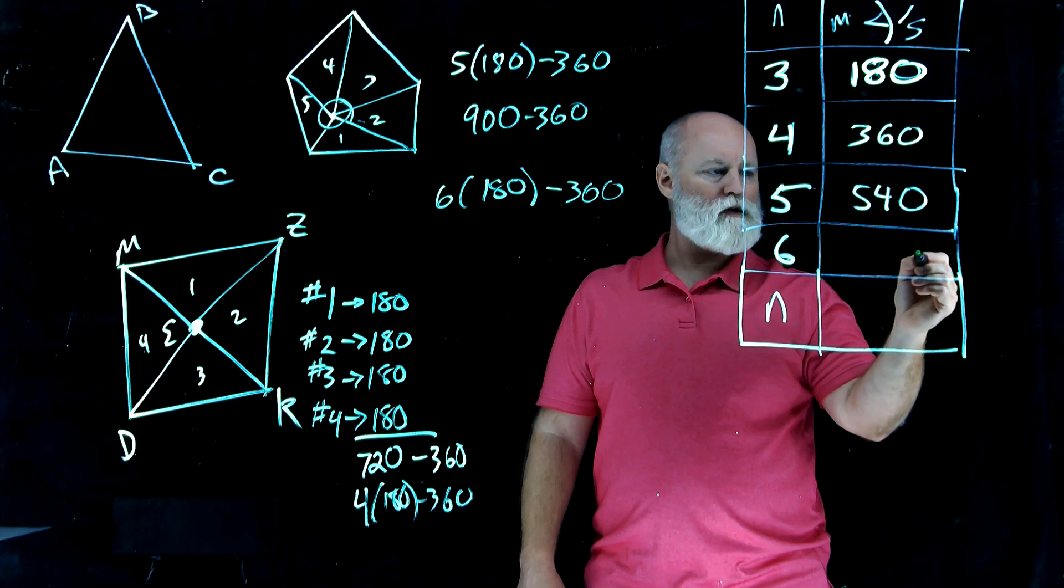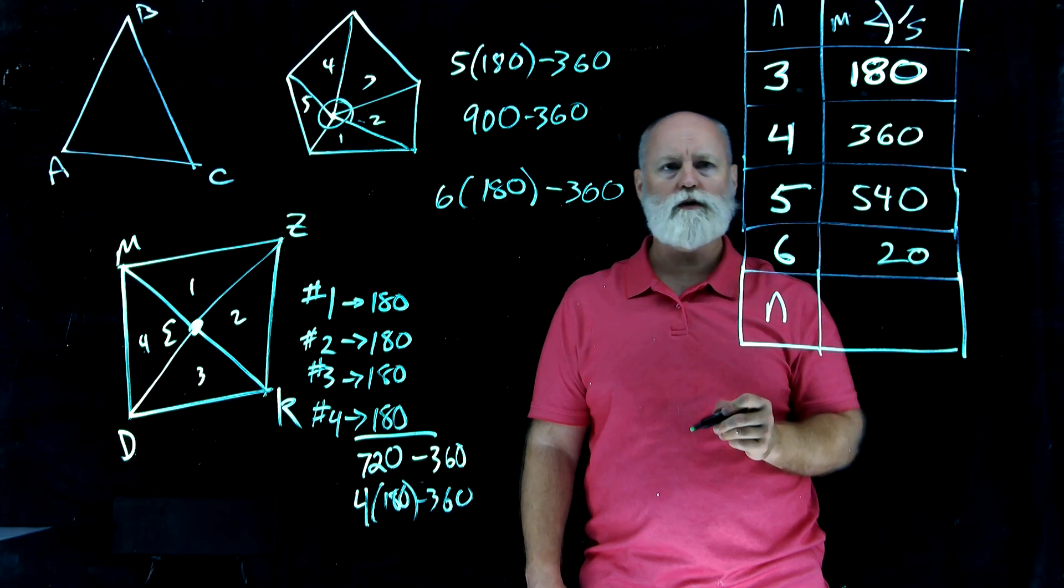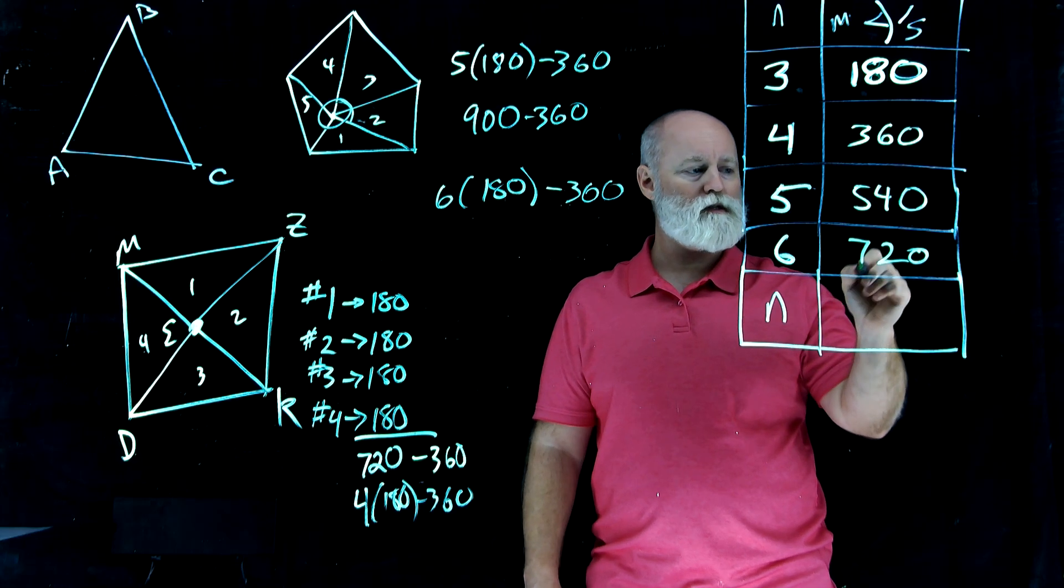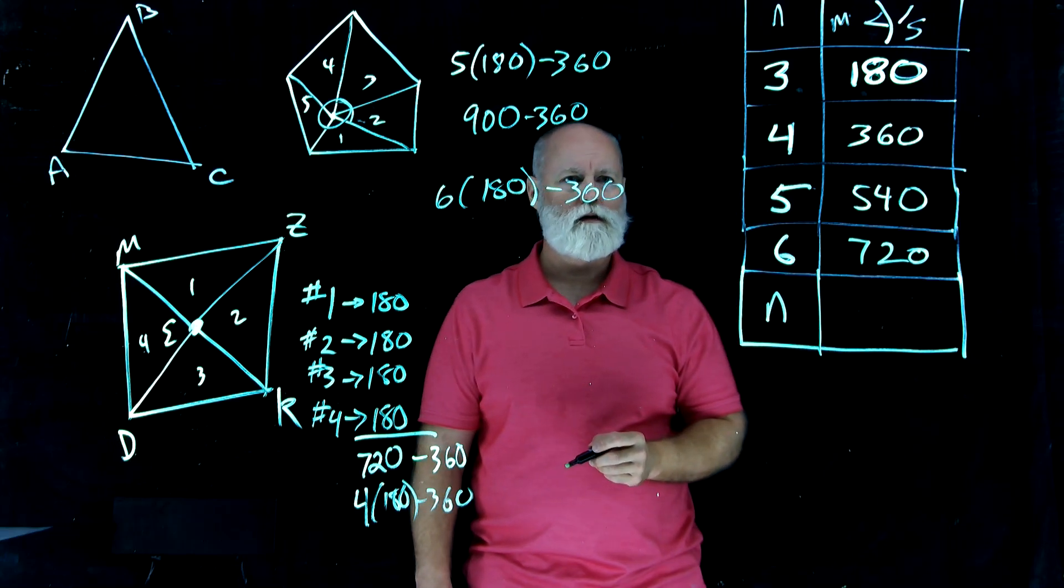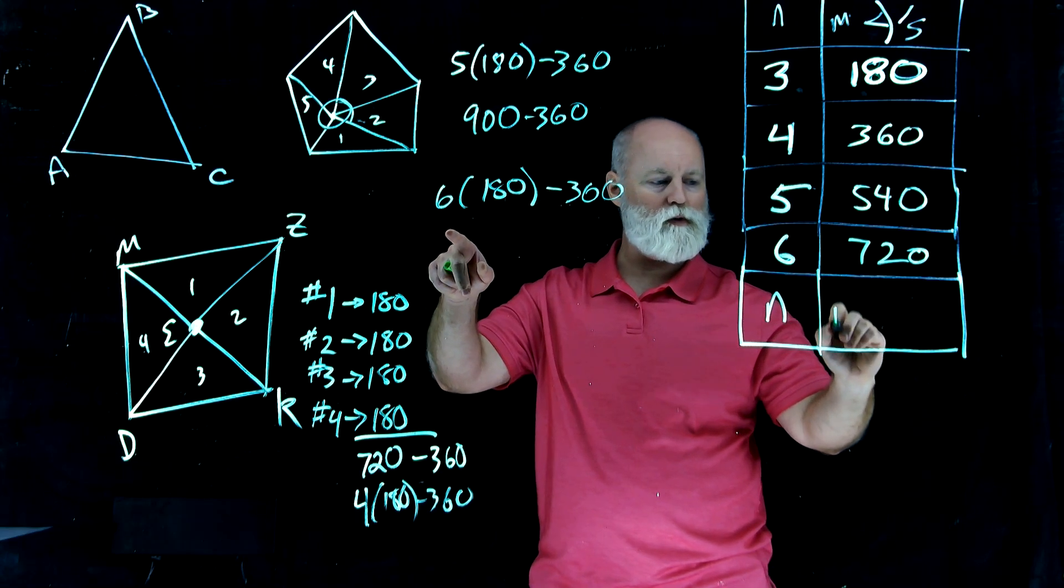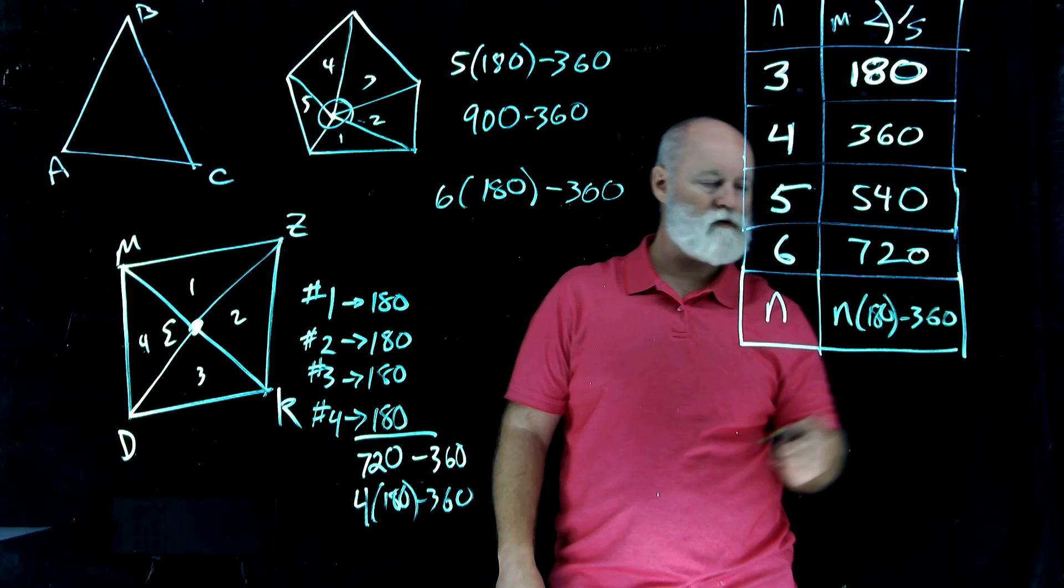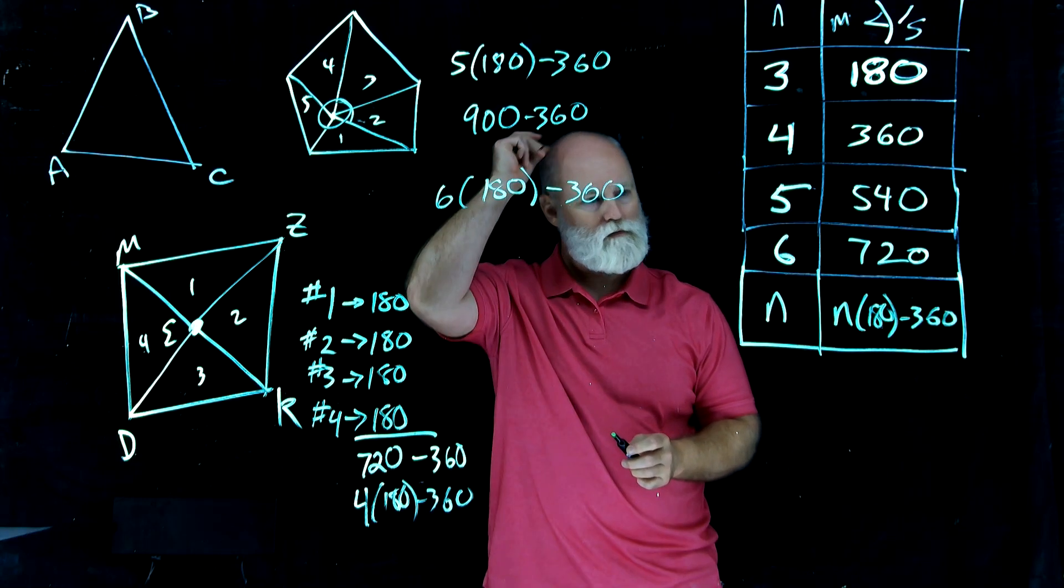Which makes this, so that's 0, 8 plus 4, that's 2, right? Carry 1, makes that 720. Well, that's cool. Notice what we're doing here every single time. We're doing N times 180 minus 360. Isn't that neat?